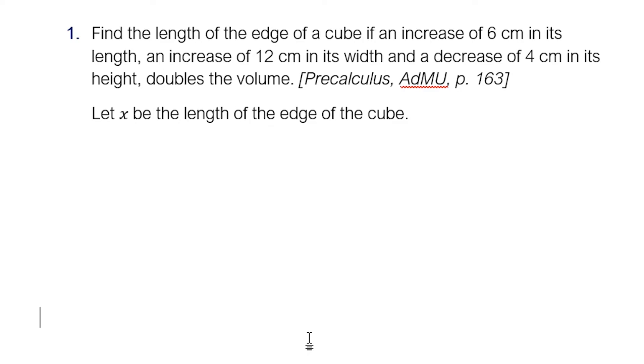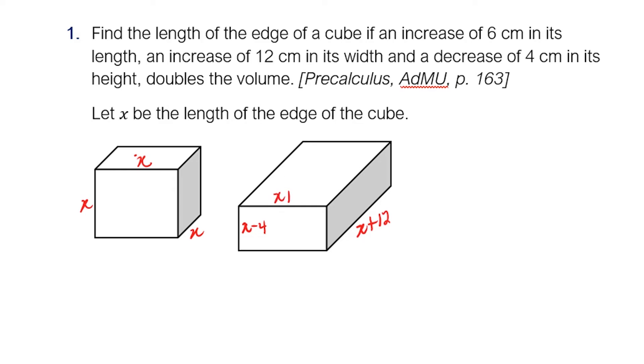Let x be the length of the edge of the cube. So we have a cube here. The length of the edge is x centimeters. So this is x, x is the height, and the width is also x. And then we modify the cube. There is a 6 centimeter increase in length, an increase of 12 centimeters in its width, but a decrease of 4 centimeters in the height. So this is our modified cube. It's not a cube anymore, it's a prism. Its width increased by 12, so this is x plus 12 now. Its height decreased by 4, so this is x minus 4 now, but the length is also increased by 6. So we have x plus 6 for the length. Now, we have the old volume or the original volume of the cube, and the volume of the new solid, the rectangular prism.